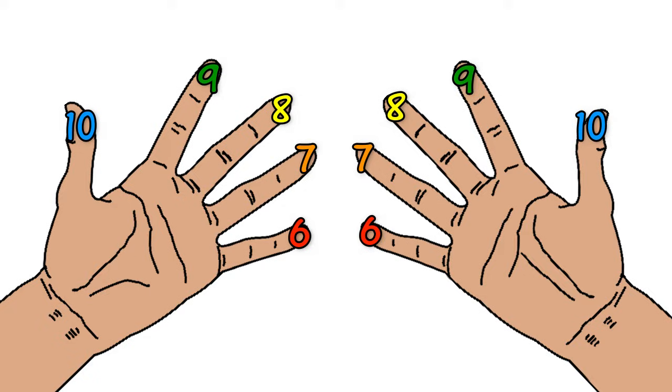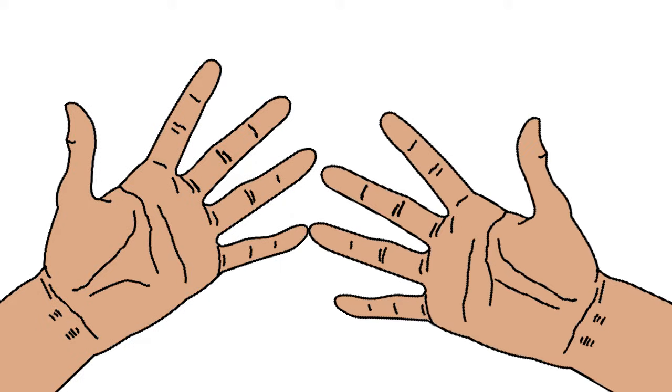Say we wanted to do 6 times 7. So we choose any hand for the 6, it doesn't matter which one. I'll just choose the left hand. So get the 6th finger which is the pinky one and then you get the 7th finger on the other hand and then you join them. Once you join them, the fingers that are joined and any fingers below all become multiples of 10. So we see that there are two fingers joined so that becomes 10, 20 and there's one finger below. That's an extra 10. So that's 30 altogether.